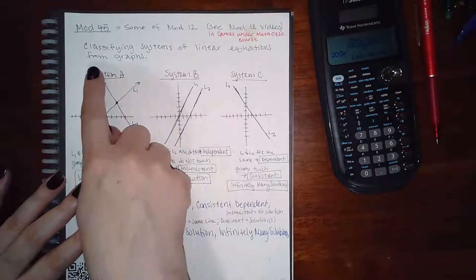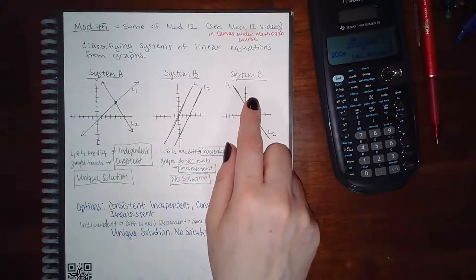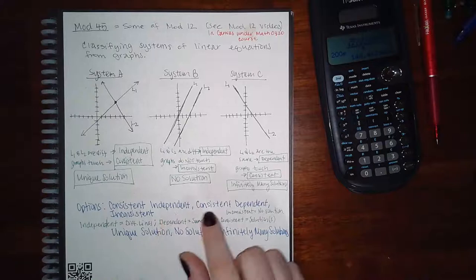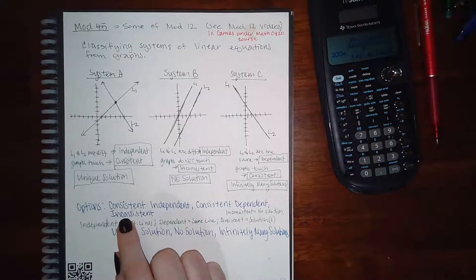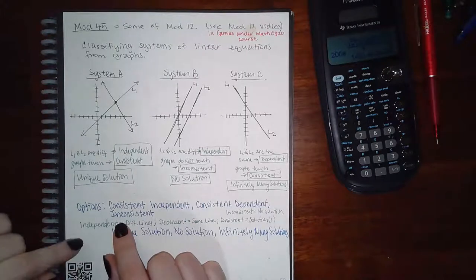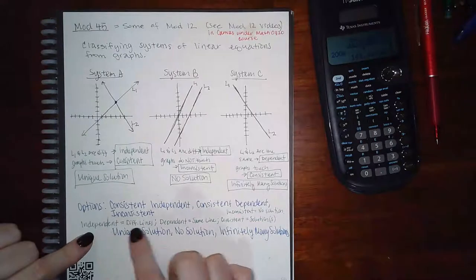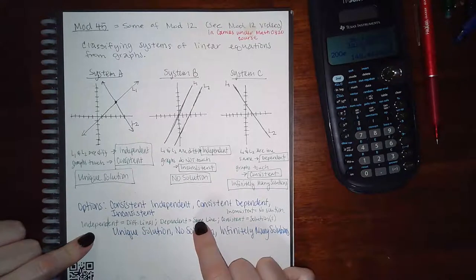They'll have three different graphs and they basically want you to give them these labels: consistent independent, consistent dependent, or inconsistent. We need to know what these words mean. Independent means that you have two different lines. Dependent means that it actually is the same line. Consistent means that you have solutions, which means the graphs touch. They could touch at one spot or they could touch everywhere.